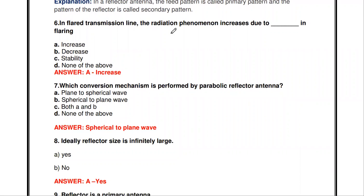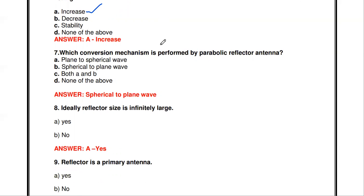The radiation pattern of the reflecting antenna is called the secondary pattern. The next question: in a flared transmission line, the radiation phenomenon increases due to dash in flaring. In a flared transmission line like a horn antenna, the radiation phenomenon increases due to the flaring. If you increase the flaring, the radiation phenomenon also increases.